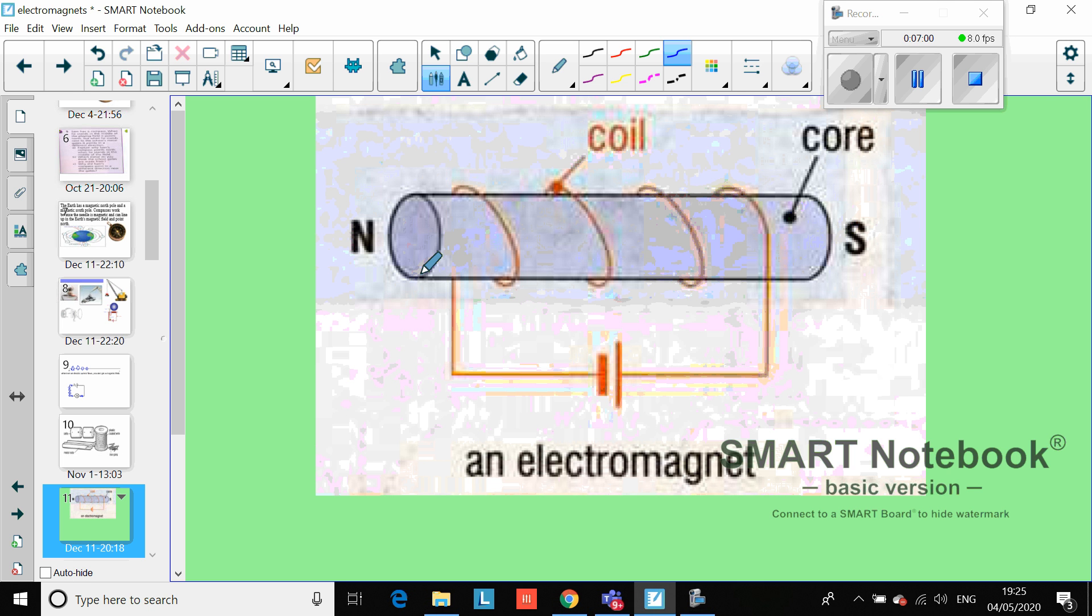If this core is made from a magnetic material like steel or iron, then that will become a magnet in its own right with a north and a south pole, just like the magnets you learned about last lesson. Except there's one big difference: if you turn the electricity off, this does not stay a magnet - the magnet disappears.